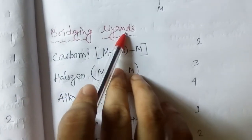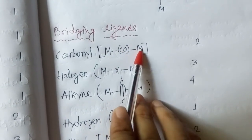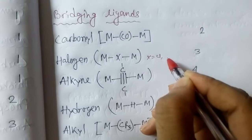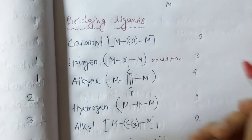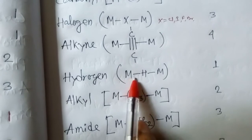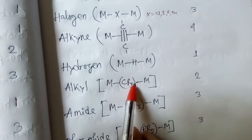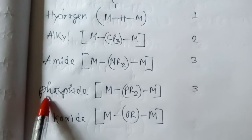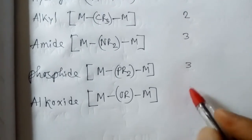Now bridging ligands are very important. Bridging carbonyl — metal bonded to CO bonded to another metal — contributes two electrons. Bridging halogen (X = Cl, Br, I, F) contributes three electrons. Bridging alkyne contributes four electrons. Bridging hydrogen contributes one electron. Bridging alkyl contributes two electrons. Bridging amide contributes three electrons. Bridging phosphide contributes three electrons.